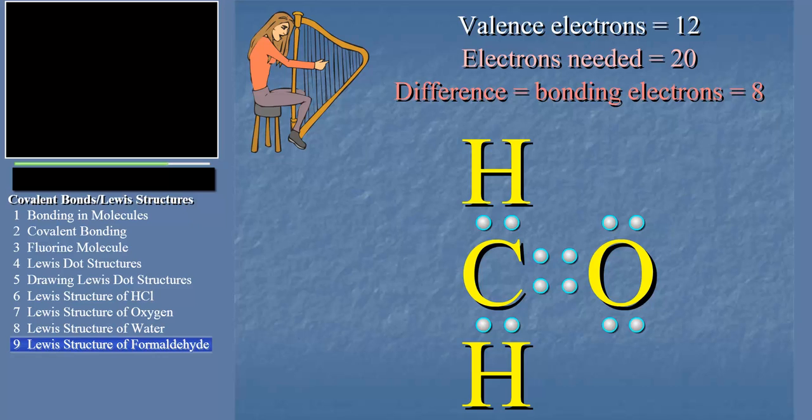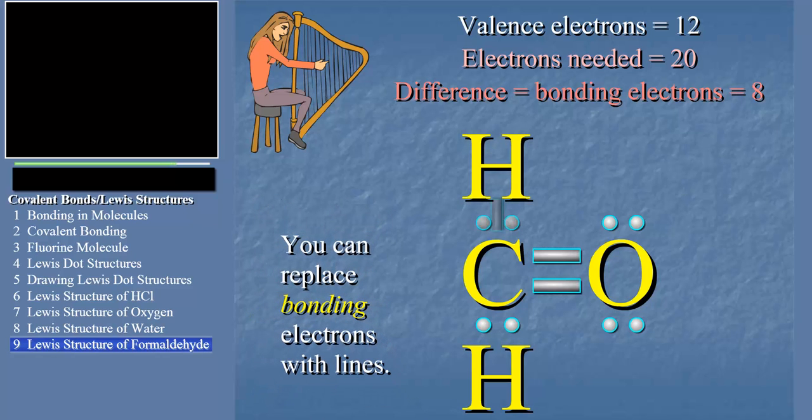Now, wasn't that beautiful? Of course, we could represent each electron pair by a line.